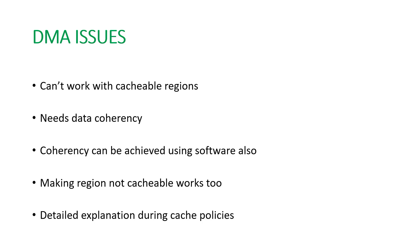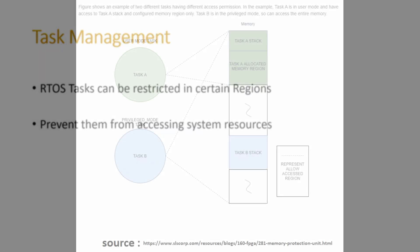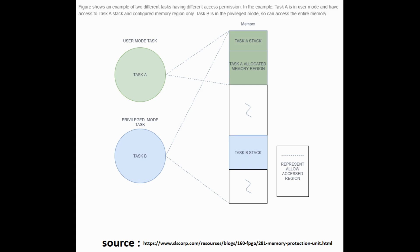We will see more about data coherency in upcoming videos. Another thing we can do using MPU is task management. We can restrict any task within a certain region to prevent its access to other resources. For example, task A can be restricted to a green memory zone, while task B is allowed to access the entire memory region. We won't be dealing with task synchronization here, but we will certainly take care of speculative access and DMA.